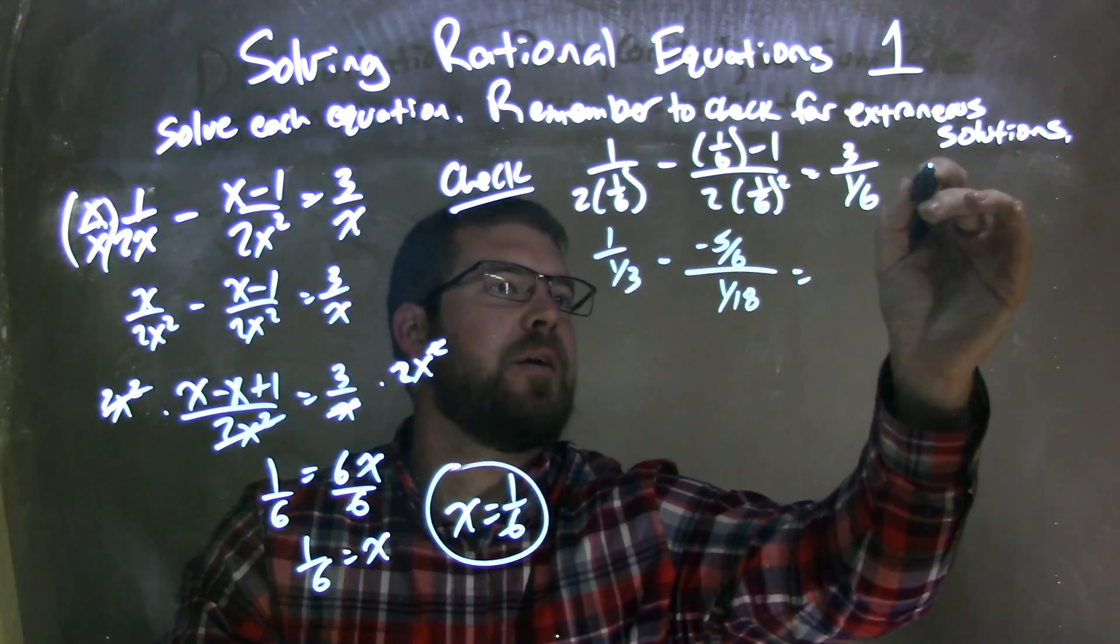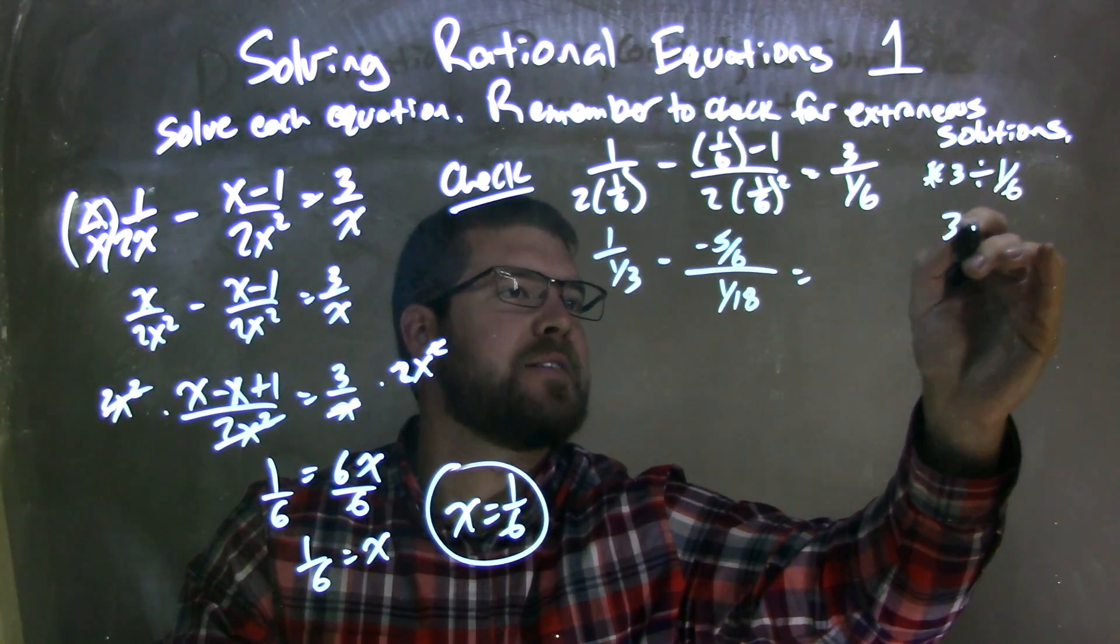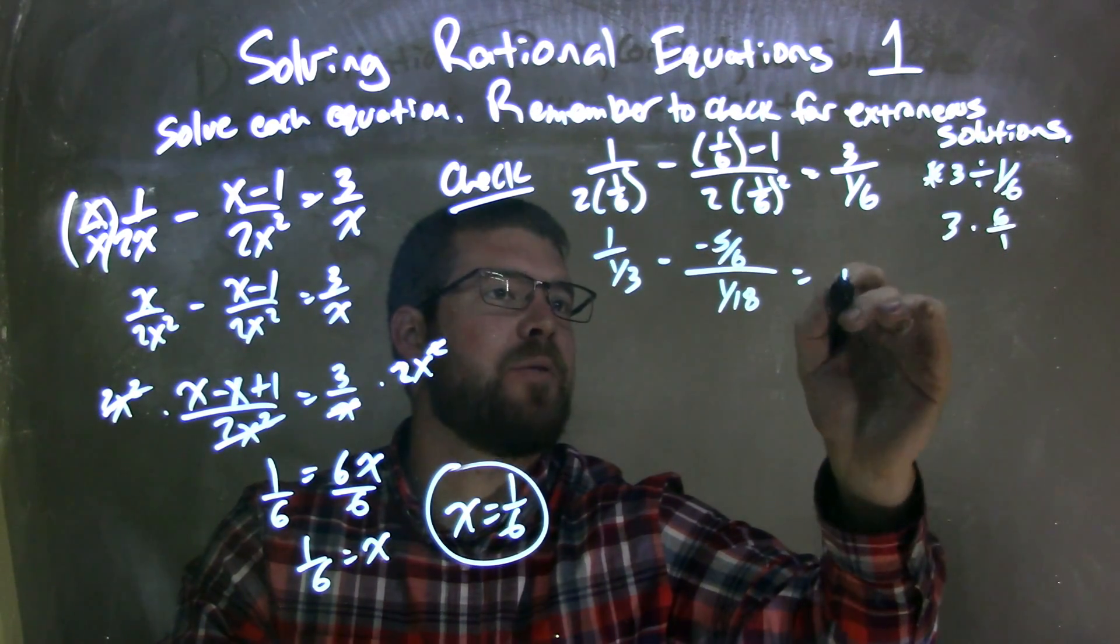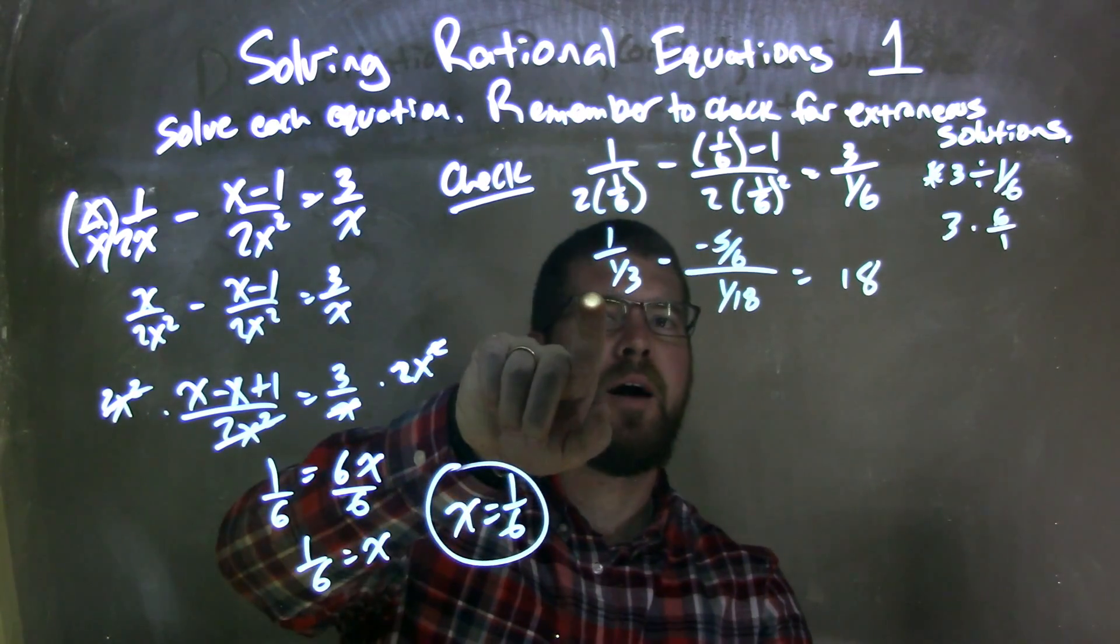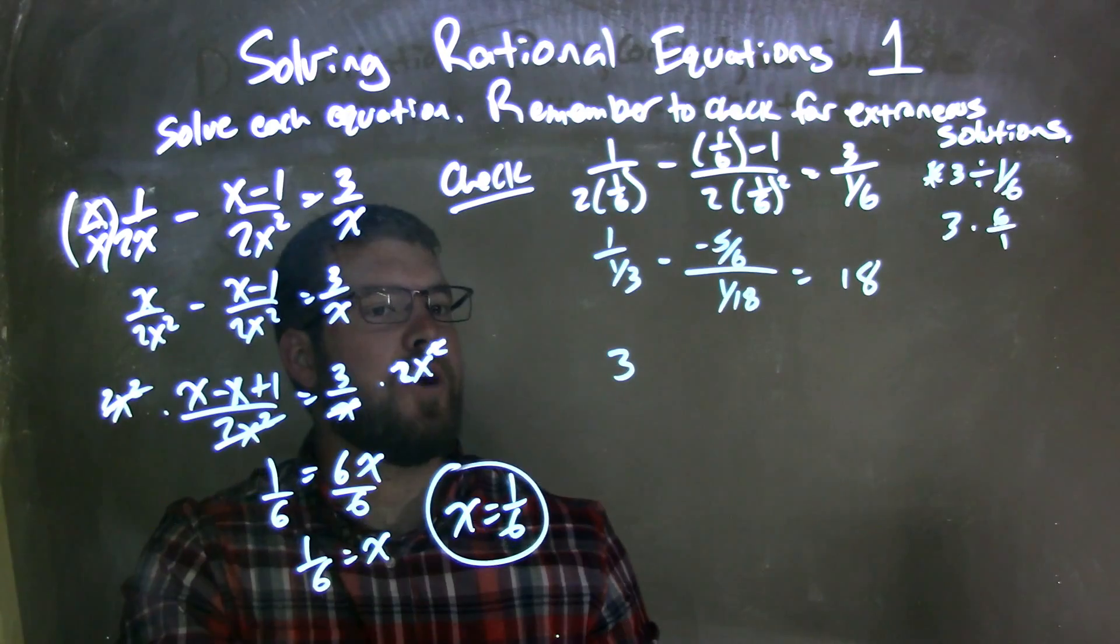Now a little trick here we do: 3 divided by 1 sixth is the same thing as 3 times 6 over 1, and 3 times 6 is 18. So we have an 18 actually right there. We're going to do that same trick with this thing here, giving me a 3. So 1 divided by 1 third is just 3.